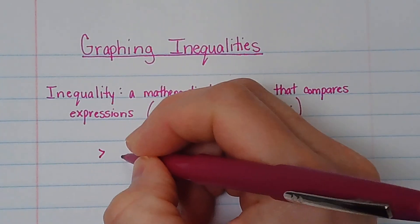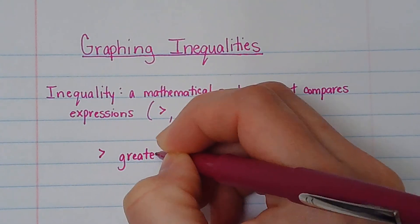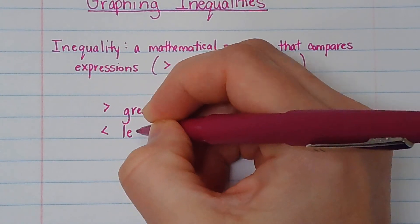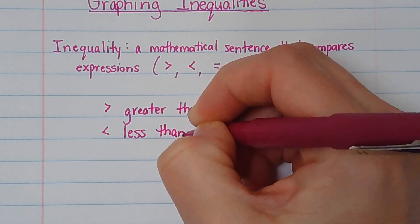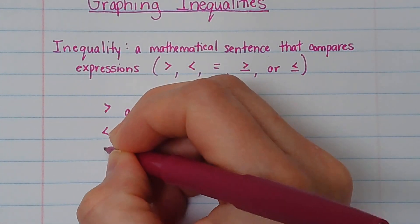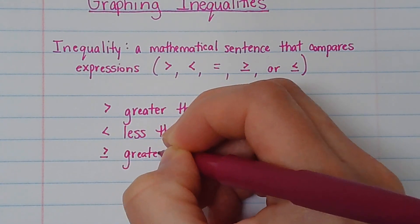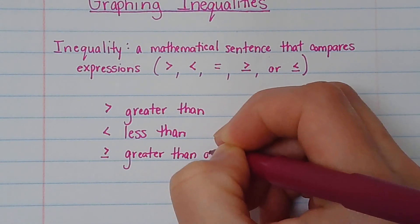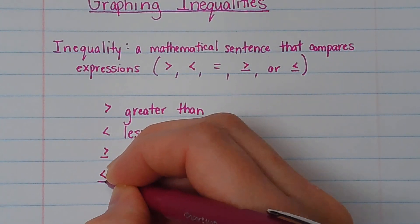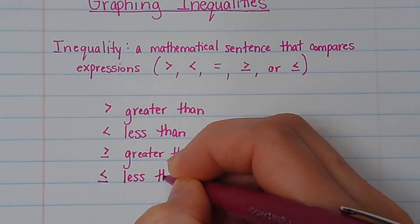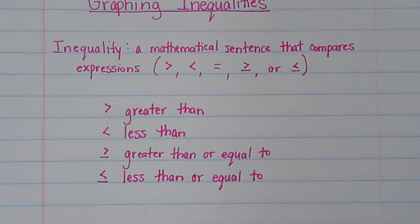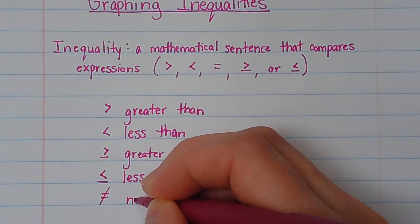Our signs are: we've got greater than, less than. You obviously know equal to. This one might be new for you — this is greater than or equal to. Then we have less than or equal to. And obviously we've got the one that is not equal.